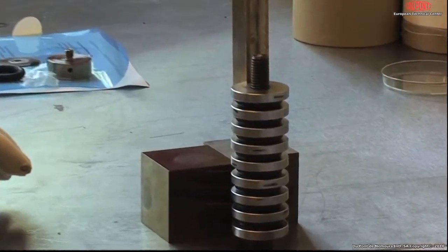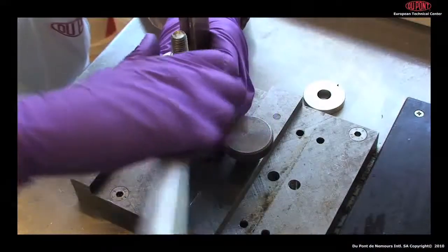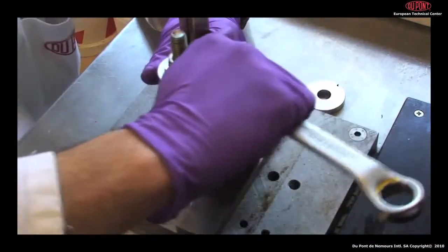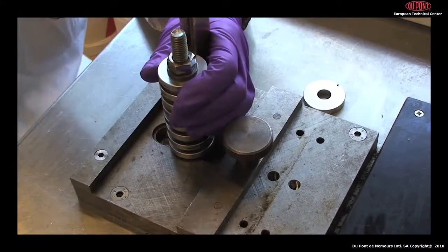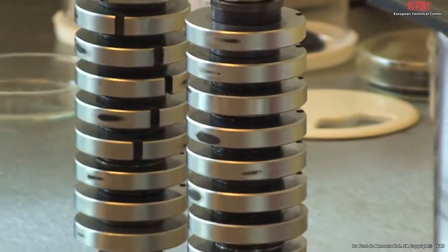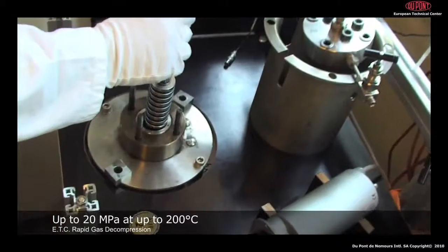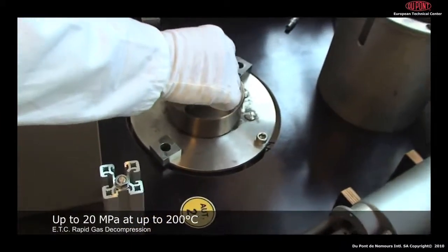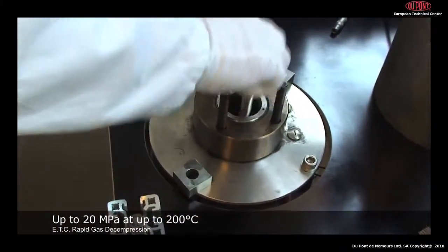Tests at DuPont are performed on O-rings in autoclaves at up to 20 MPa of carbon dioxide and at a temperature of up to 200 degrees centigrade. Carbon dioxide under these conditions is a very powerful solvent. However, other gases could also be used.